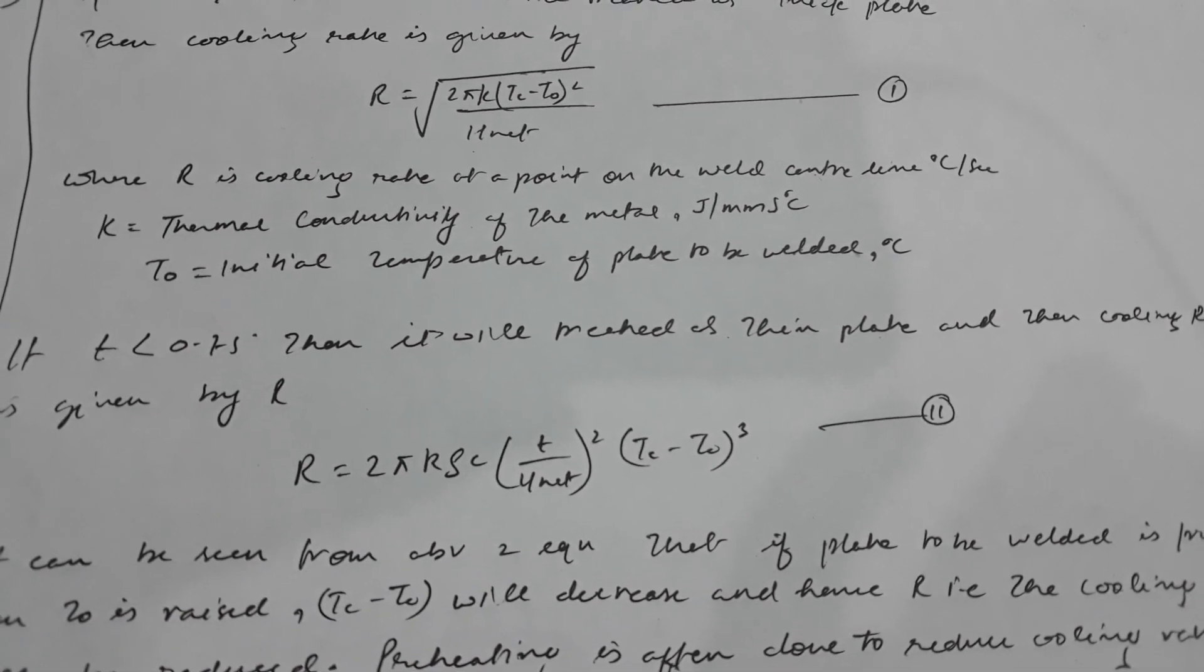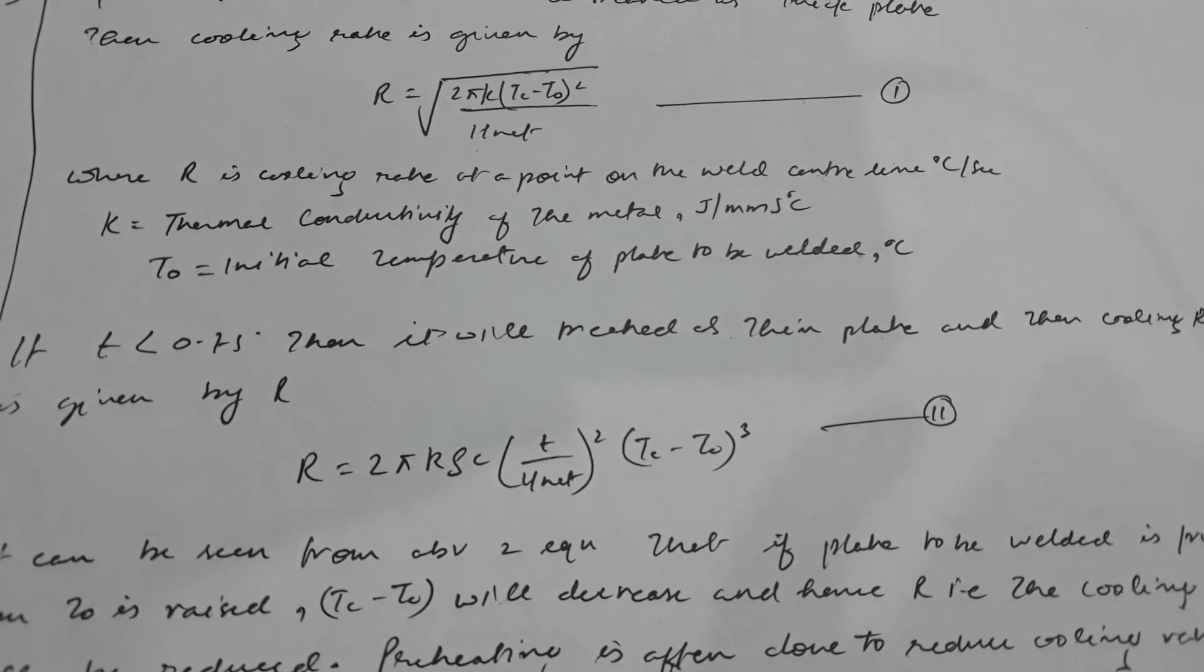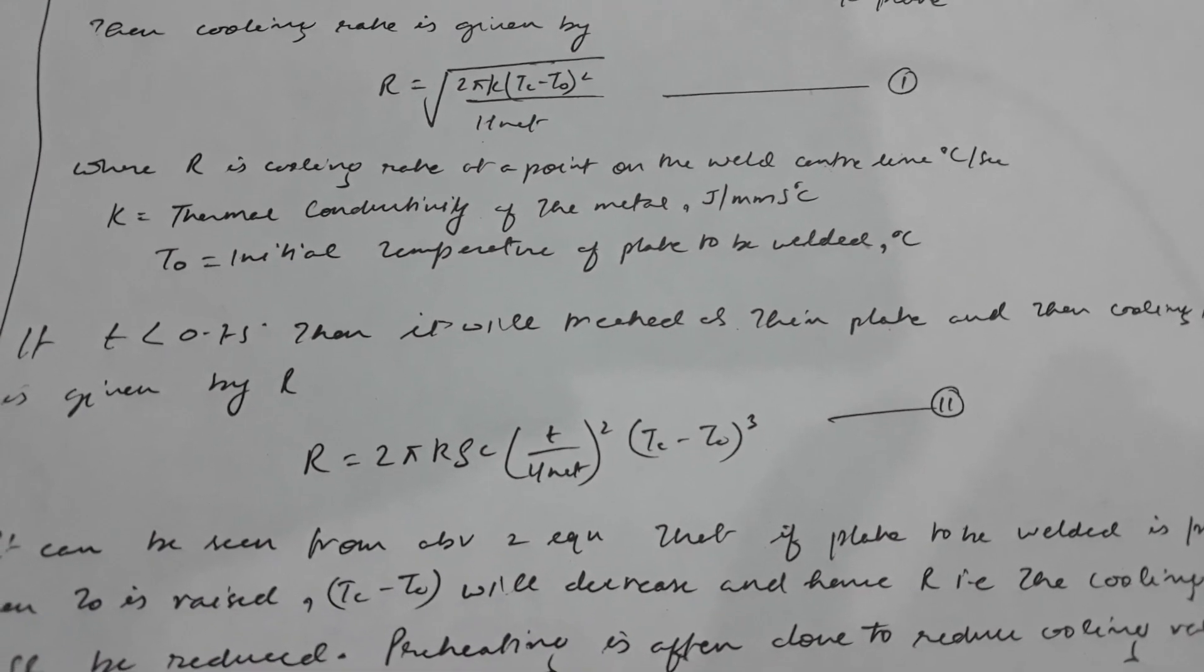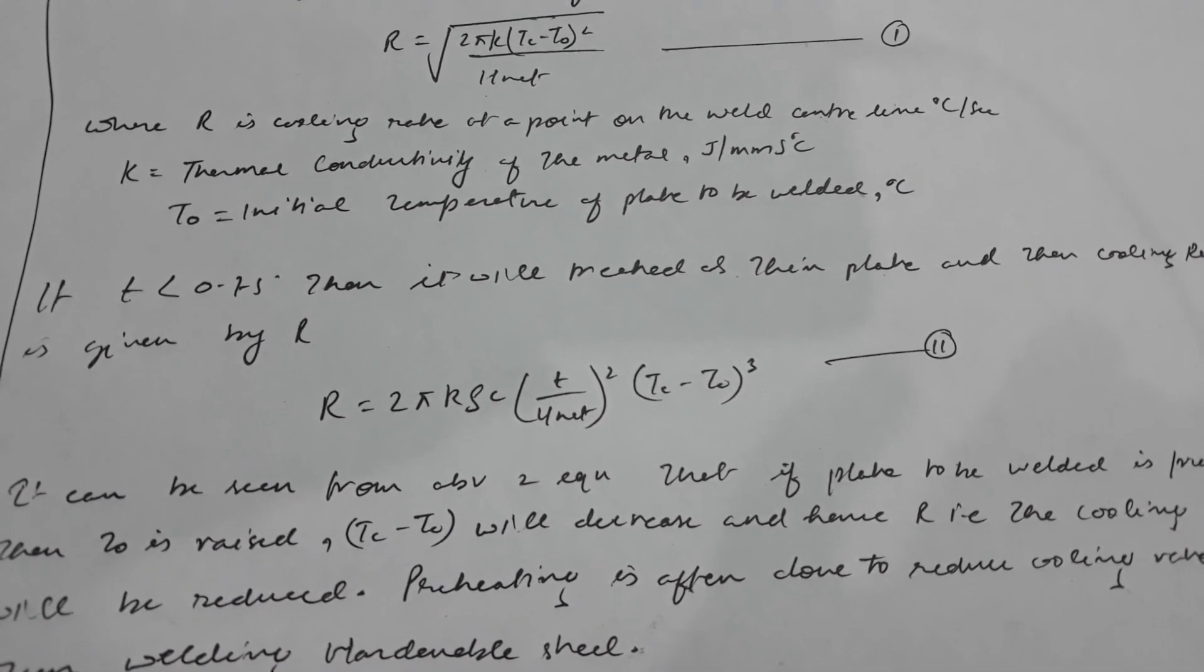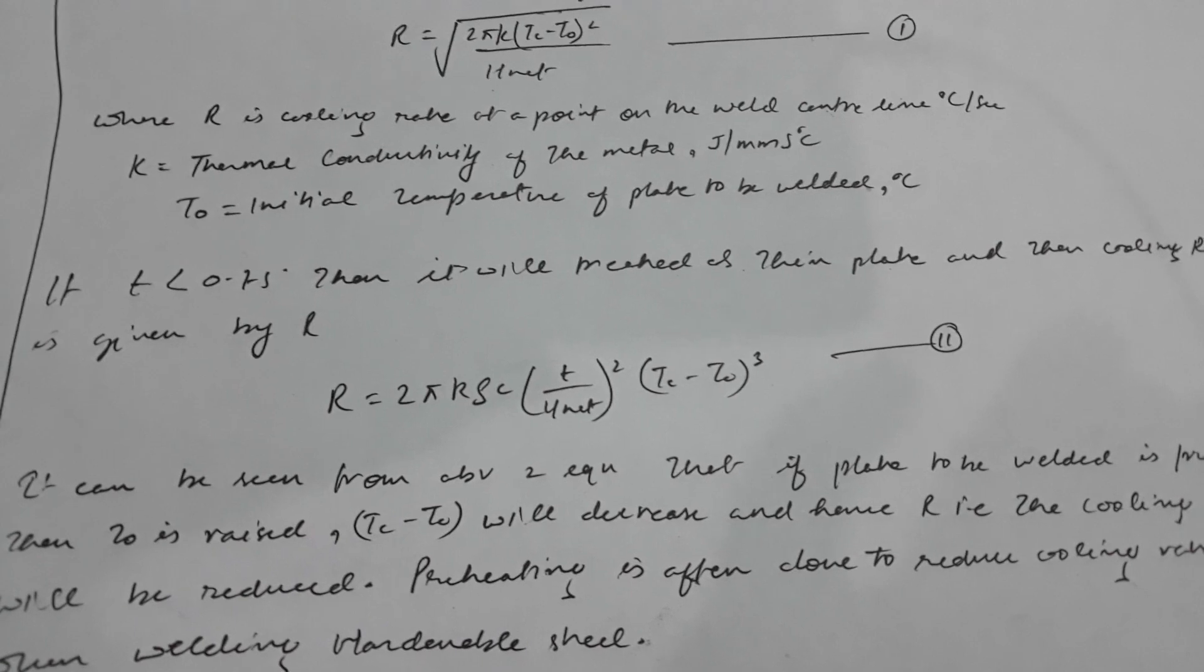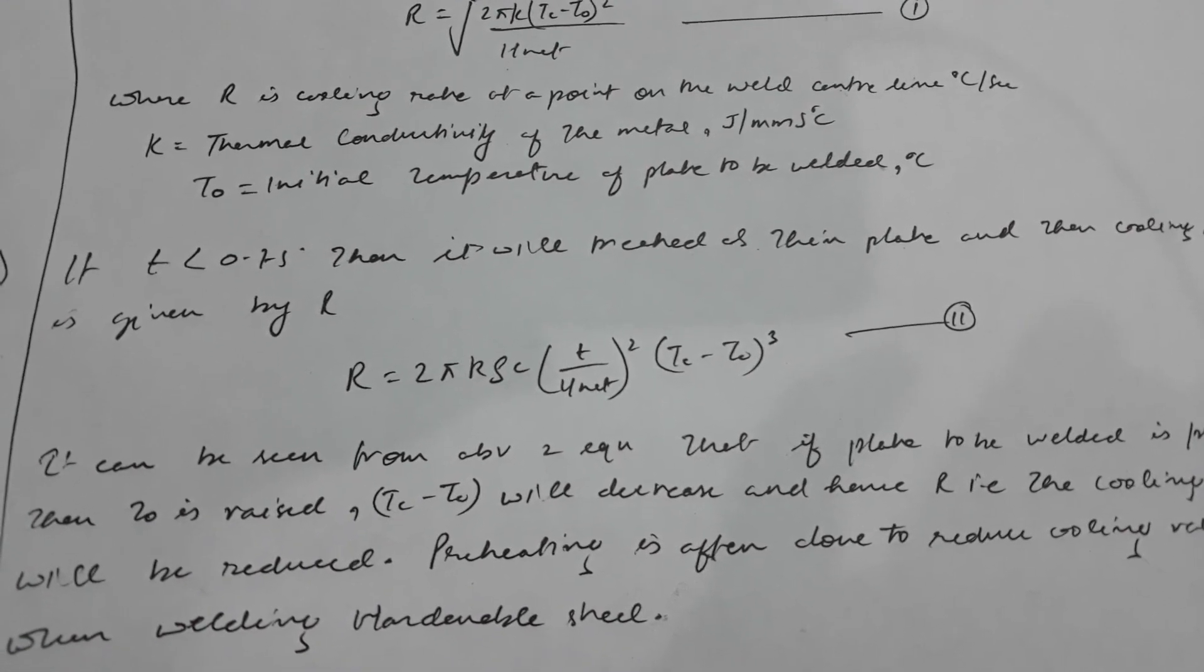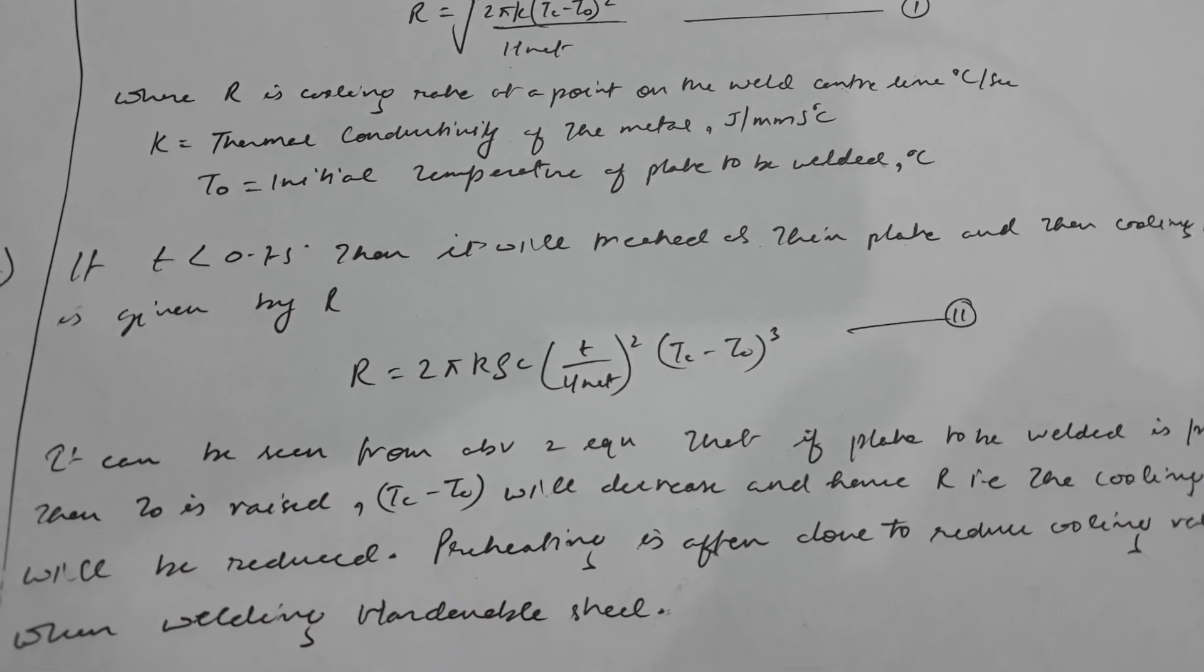R is equals to square root of 2 pi k times tc minus t0, times q squared upon h net. Where R is the cooling rate at a point on the weld centerline, k is the thermal conductivity, and t0 is the initial temperature of plate to be welded.